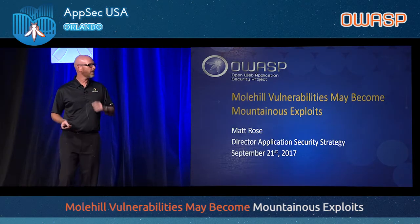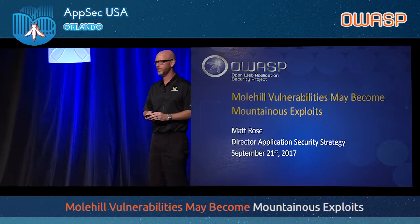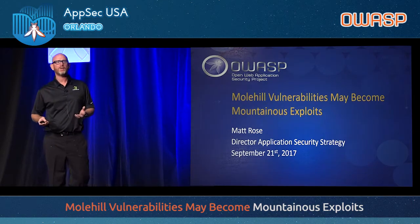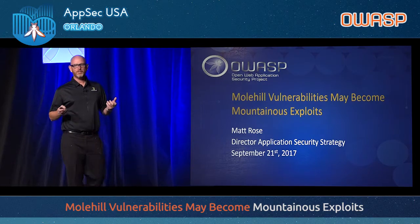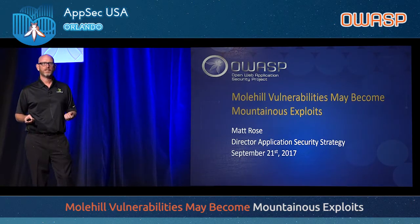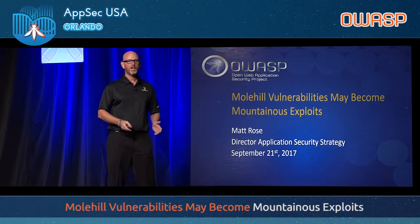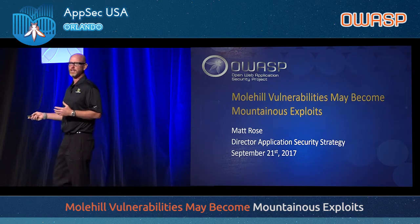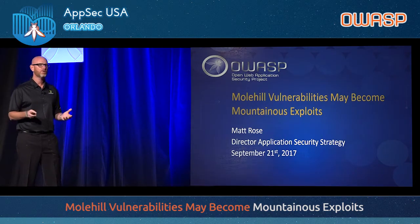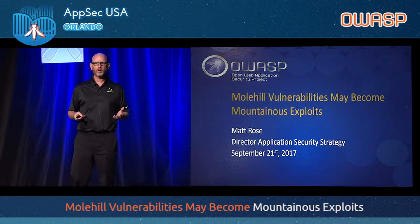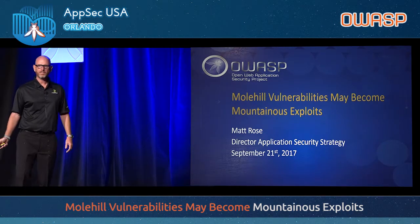The title of the talk is 'Mole Hill Vulnerabilities May Become Mountainous Exploits,' which is a bit of a tongue twister. I didn't create the title, I just delivered the message. But really, what it's about is: when you think about your application security program, it's not about the bleeding-edge silver bullet vulnerabilities. It's about disassociative issues that are harmless by themselves, which when brought together with other harmless vulnerabilities, you have an exploit.